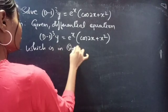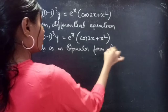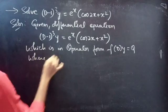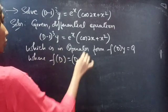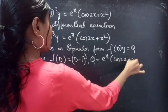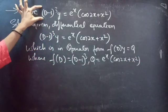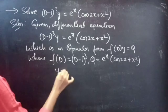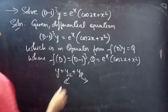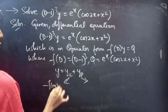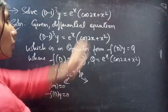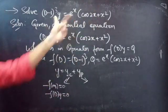Coming to the problem: f(D) into y equals Q, where f(D) equals (D minus 1) whole cube and Q is e power x into cos 2x plus x square. We need to find the general solution, given by y equals yc plus yp, where yc is the complementary function and yp is the particular integral. We find yc using the roots of the auxiliary equation of the given non-homogeneous equation.